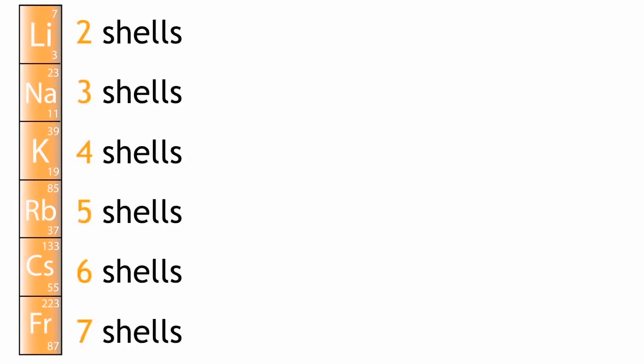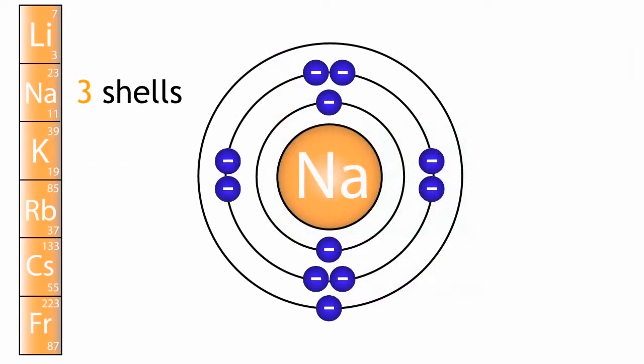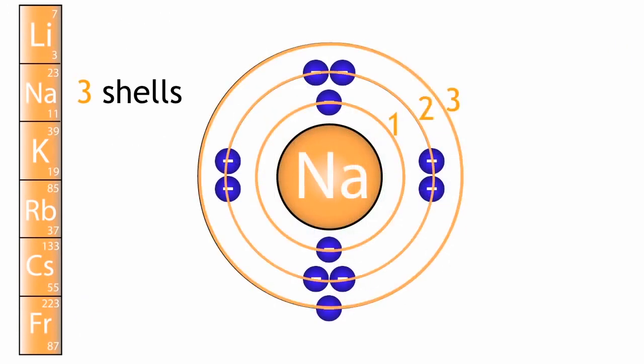The other thing to see is the number of shells they have is related to the row they are in on the periodic table. For example, sodium has 3, so this therefore is their period.